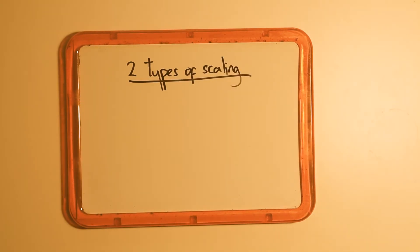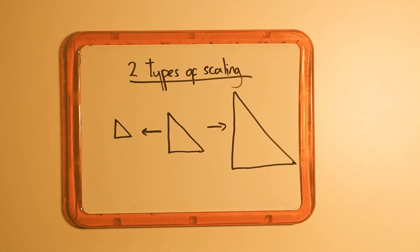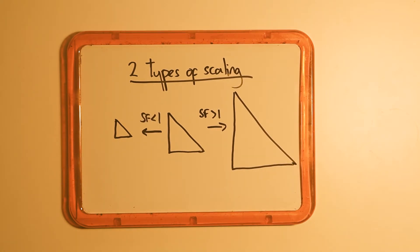Now there are two types of scaling: scaling up and scaling down. If the scale factor is more than 1, you are scaling up, and if the scale factor is less than 1, you are scaling down.